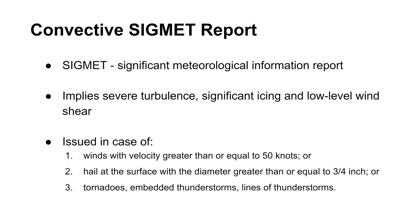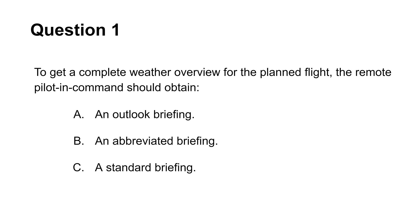One last thing to mention is that weather briefing service providers may also issue a convective SIGMET report, which stands for Significant Meteorological Information Report. This report implies severe turbulence, significant icing, and low-level wind shear. The typical circumstances under which a convective SIGMET is issued are winds with velocity greater than or equal to 50 knots, hail at the surface with a diameter greater than or equal to three-quarters of an inch, tornadoes, embedded thunderstorms, or lines of thunderstorms.